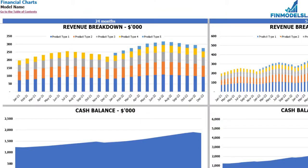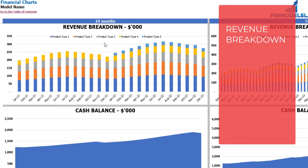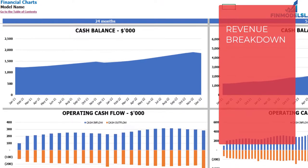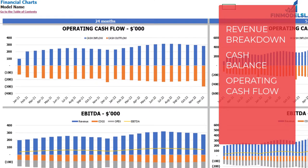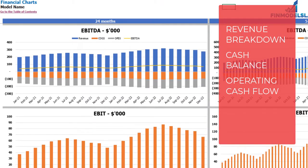On the financial charts tab you may see the main financial outputs in graphical form. On the left side you may see charts for 24 months and on the right side charts for 5 years or 60 months. The top charts show revenue breakdown by product types. The next charts show cash balance for 2 years and for 5 years. The following charts show operating cash flow broken down by cash inflow and cash outflow. The next charts show EBITDA breakdown — revenue, COGS, and OpEx — with the resulting EBITDA value shown as a yellow line by month.